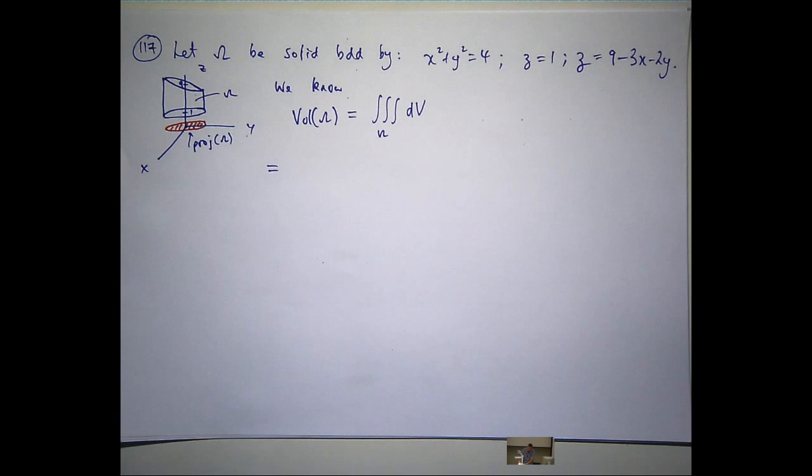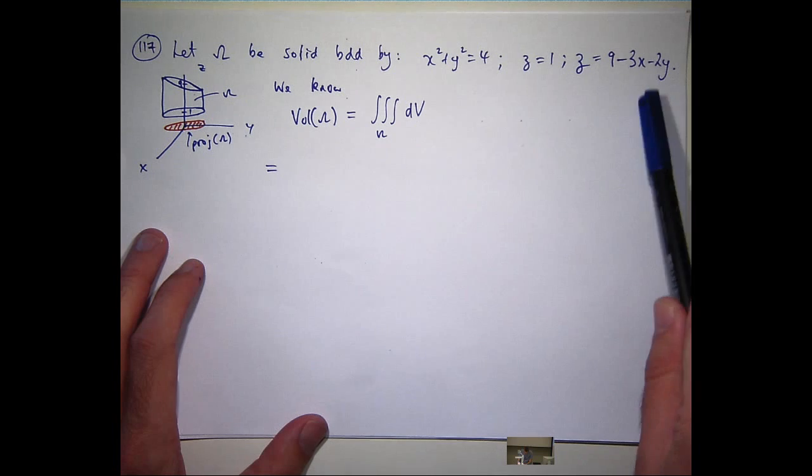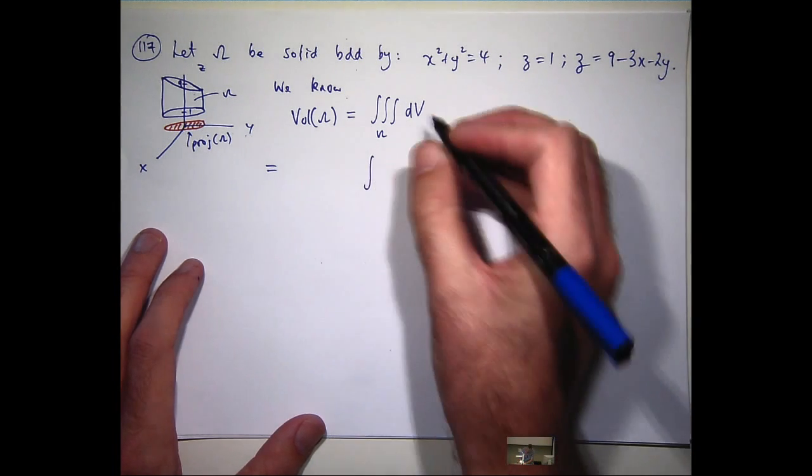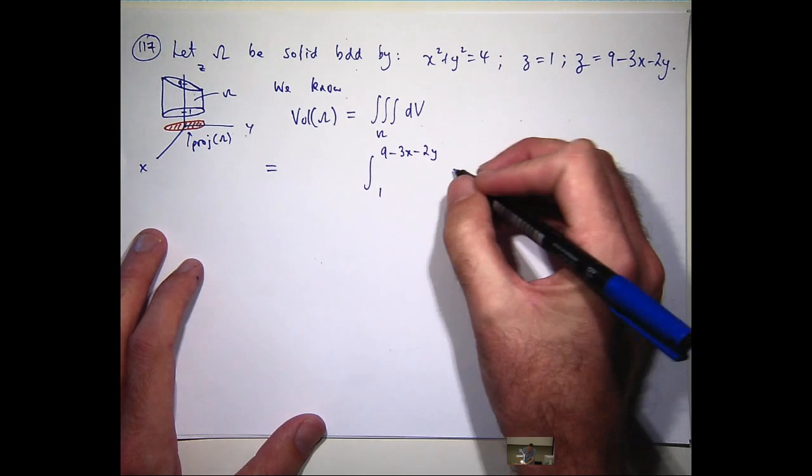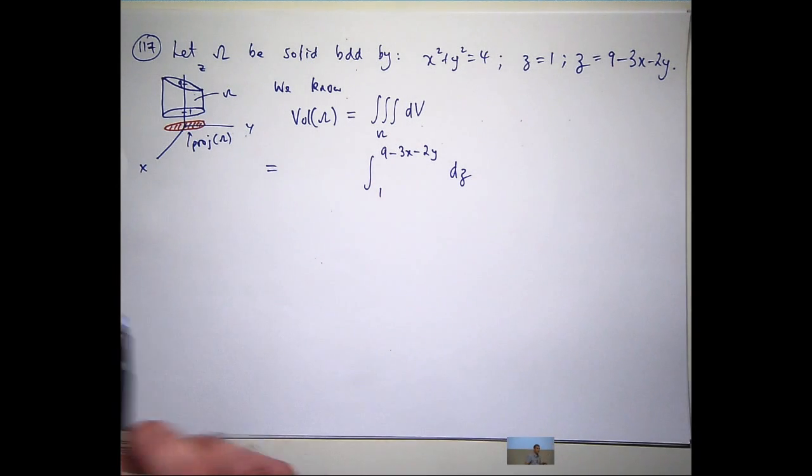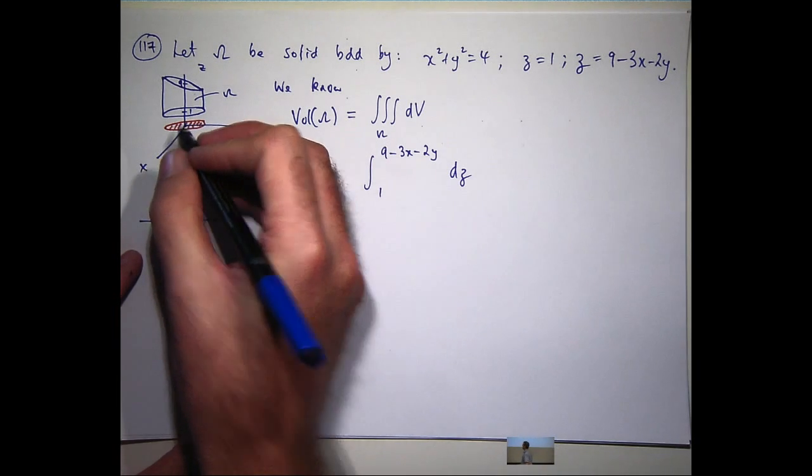So we know the following. The volume of omega is just the triple integral over the solid itself of one. Okay. So how are we going to describe my region omega in terms of x, y, and z in cartesians? Well, I'm going to do this all in one step. What are the surfaces that bound z? Well, it's bounded below by the surface one, the constant surface, and it's bounded above by this surface.